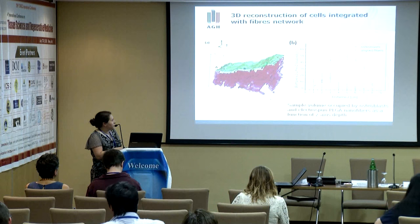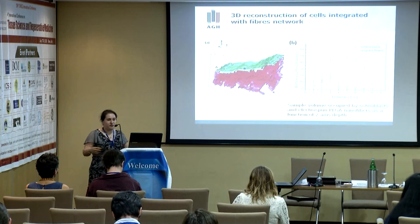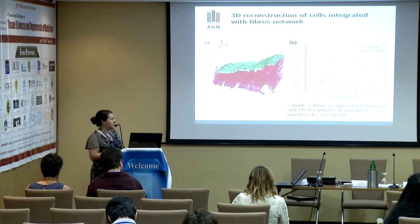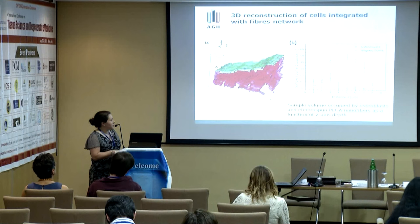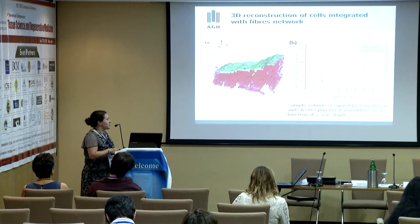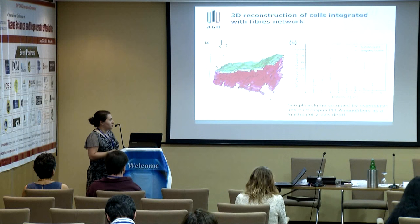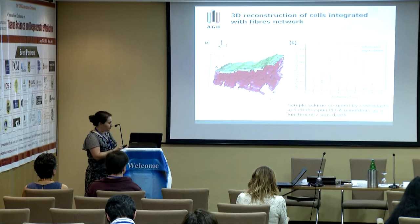We can control the direction of cell growth with the direction of the fiber, but the cell is not growing inside the network. With volume occupied we can calculate how deeply it goes into the network — it goes only about two to three microns deep into the scaffold in the z-direction.